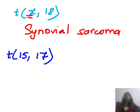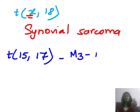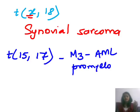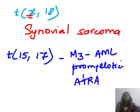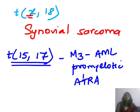Translocation 15;17: counting from 15 to 17 gives 3 steps, so it is seen in AML M3 — promyelocytic leukemia — which is ATRA (all-trans retinoic acid) responsive. These were the important translocations.